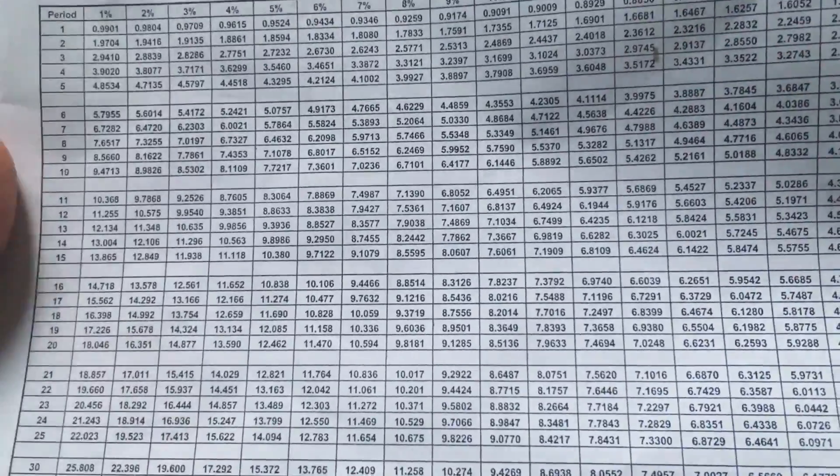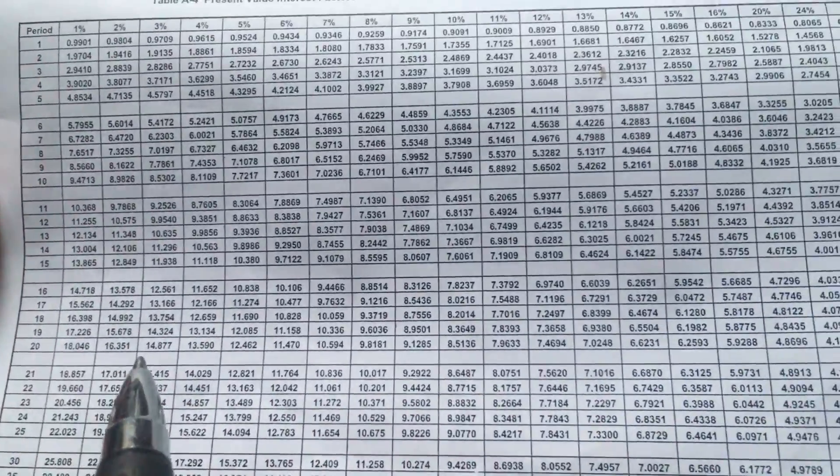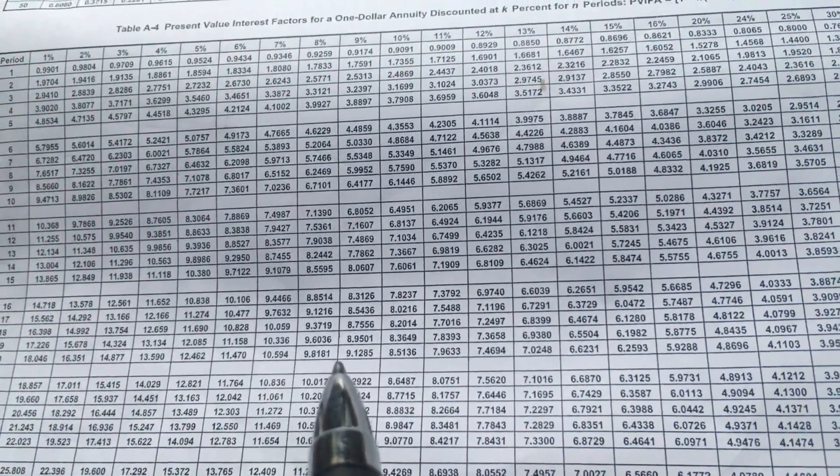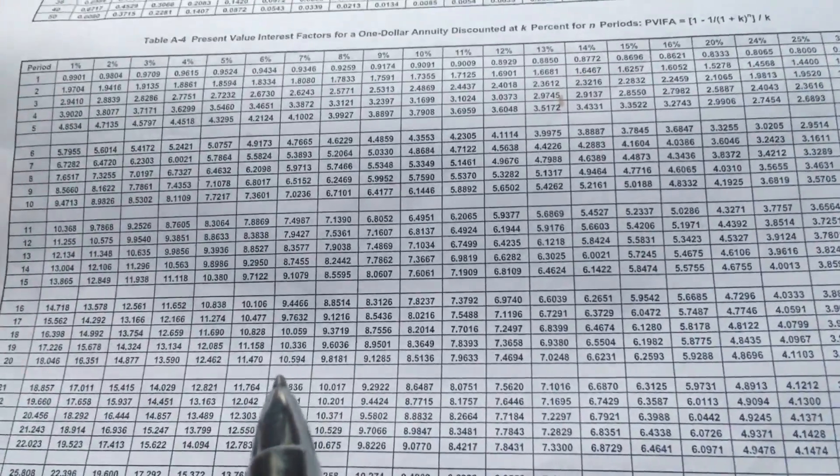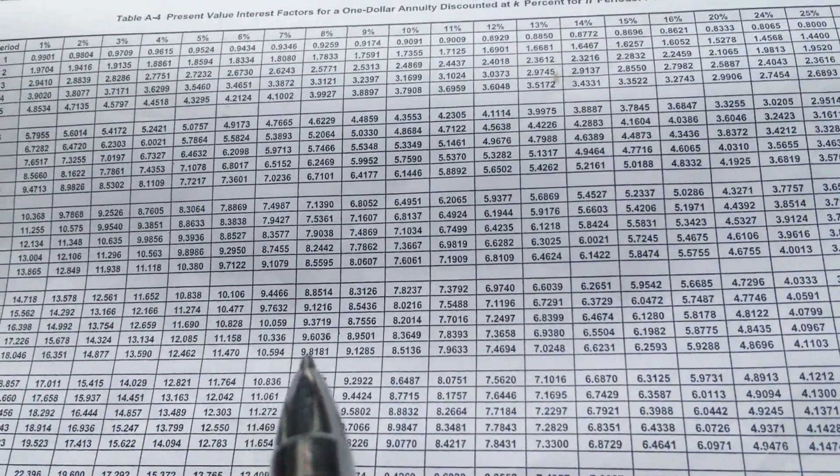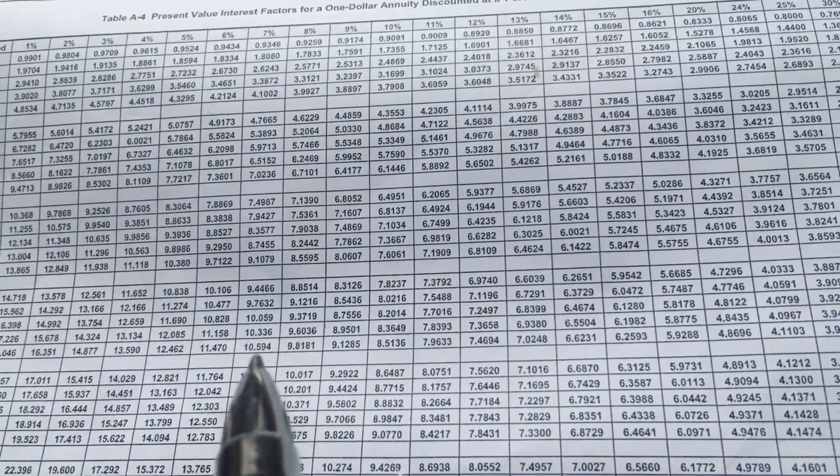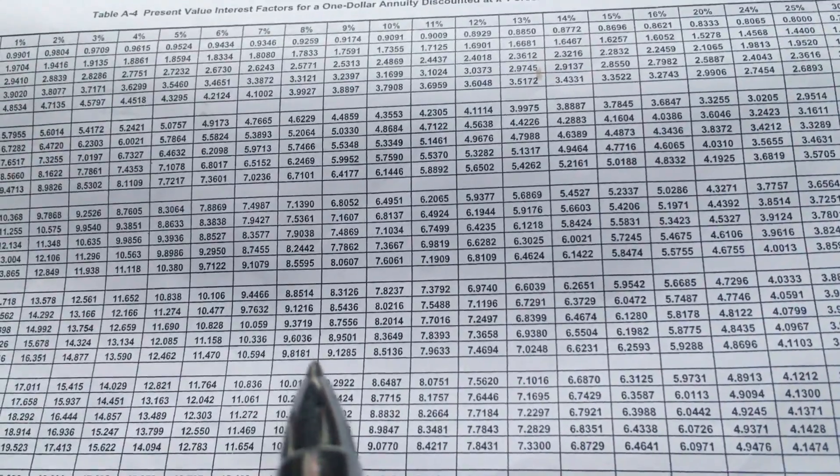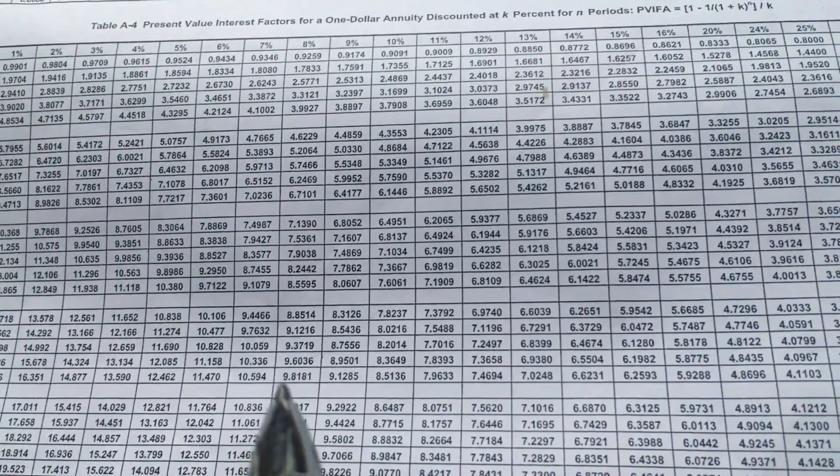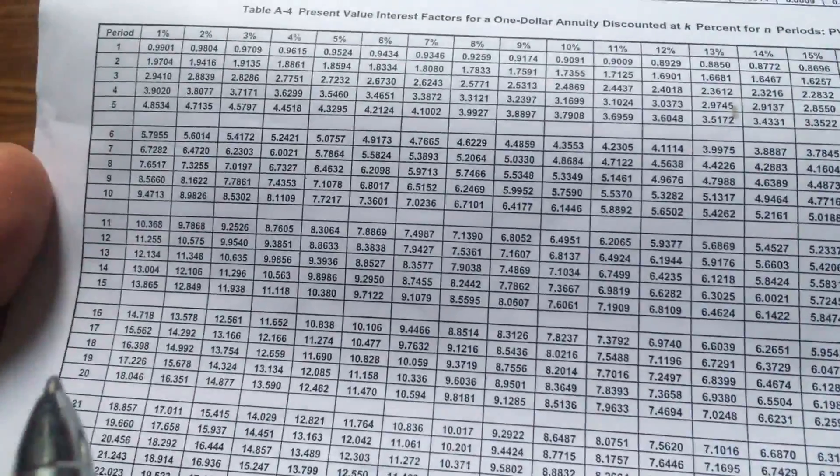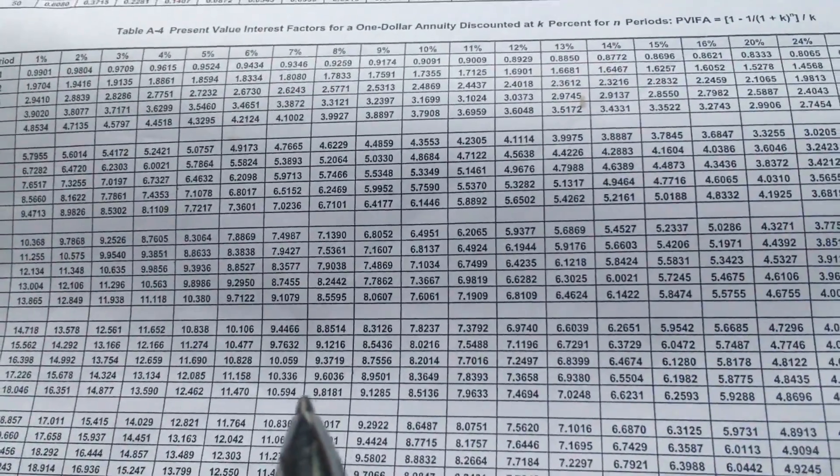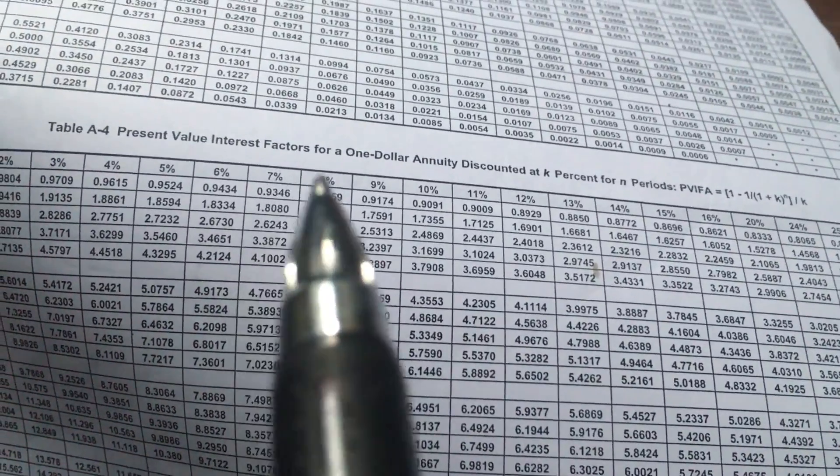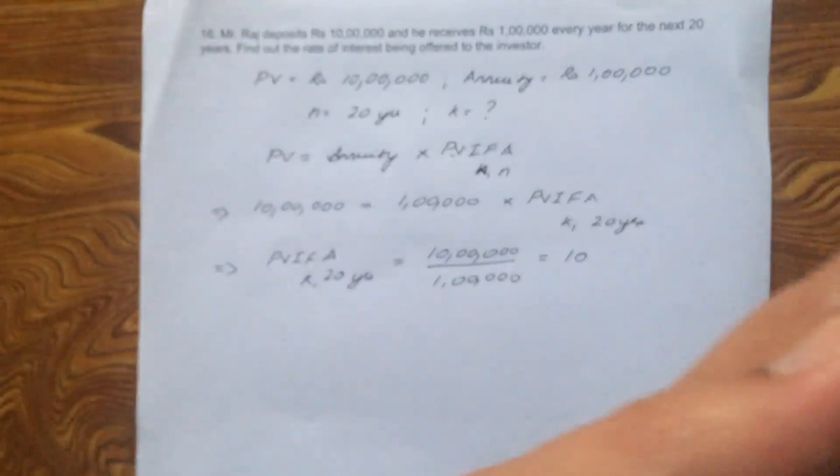Now, in this row, look at the value that is close to 10. Now, you'll notice that 10 lies between these two values, 10.594 and 9.8181. So it lies between. Now, these values that corresponds to the period 20, they also correspond to these two rate of interest, 7% and 8%. That means, K lies between 7% and 8%.